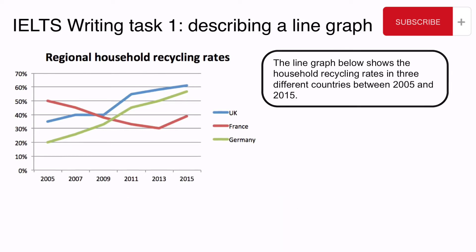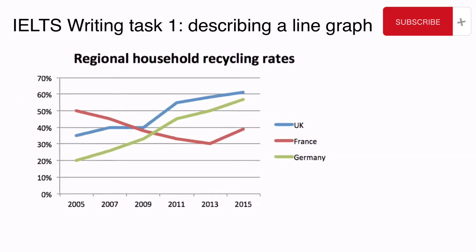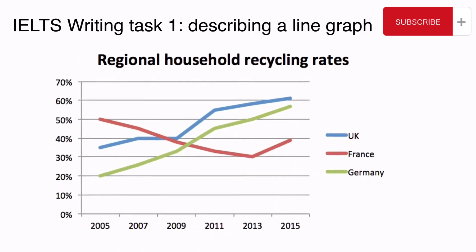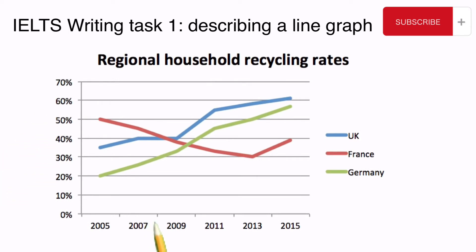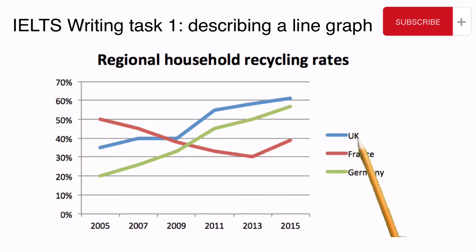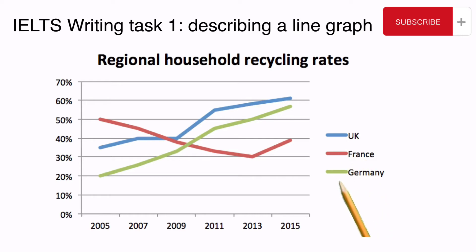Now we can take a closer look at the graph. Down the vertical axis we have the percentages and along the horizontal axis we have the years. We can also see that we have three countries: the UK in blue, France in red and Germany in green. That's our line graph.